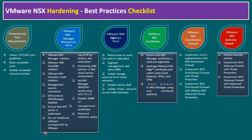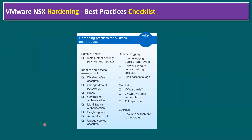These are the most recommended best practices checklist items when implementing in production. In addition, there are common hardening practices for all areas and VMware products, which include patch currency, identity and access management, remote logging, monitoring, and backups. Patch currency means installing the latest security patches and updates — for example, upgrading from NSX 4.0 to 4.1.